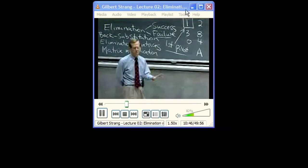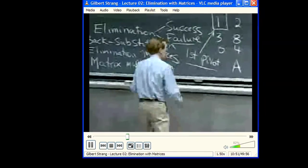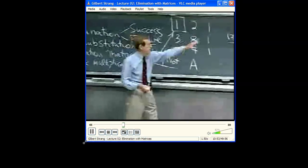How could this have failed? How could—well, by fail I mean, fail to come up with three pivots?